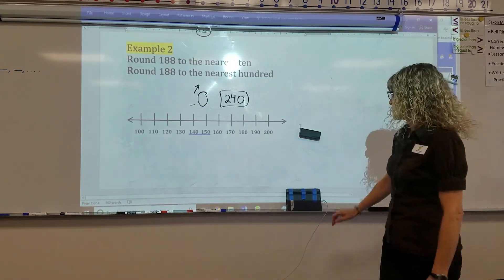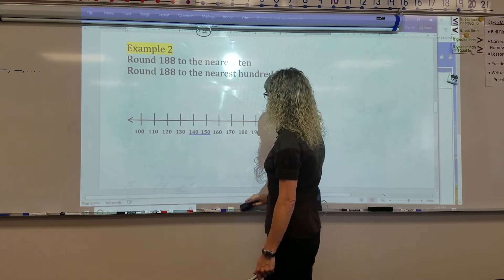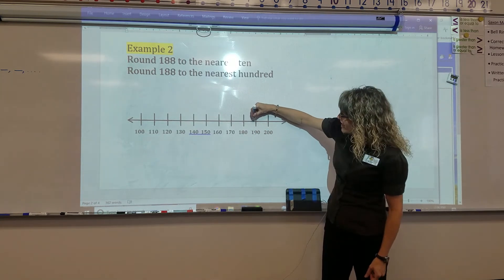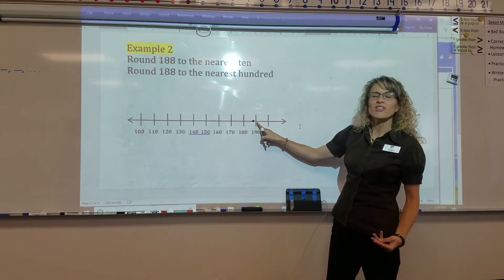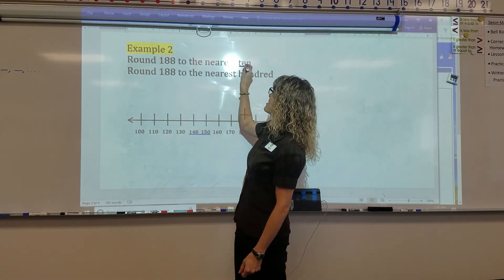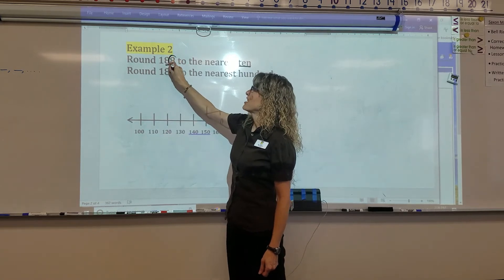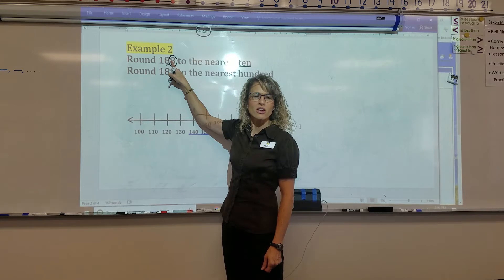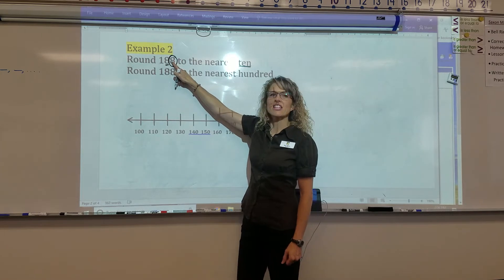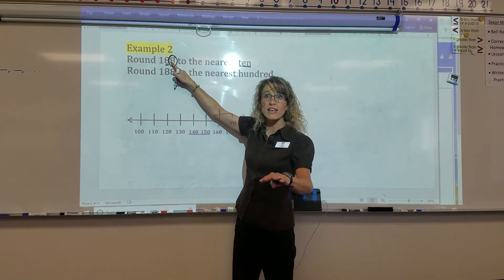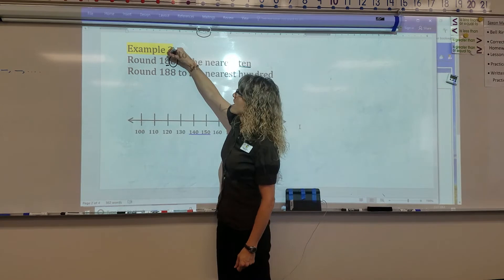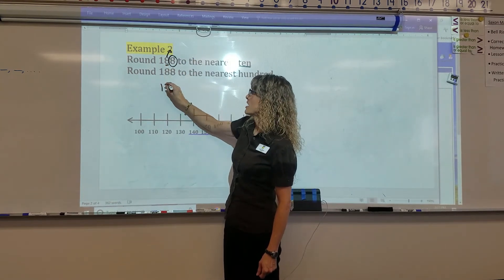Let's look at 188 to the nearest ten. So if we were to graph it, here's 180, there's 190. So the nearest ten has got to be either 180 or 190. Well, 188 is right there, so the one that's closest to it is 190. But let's try our saying. The tens digit is here, so I examine the digit to the right and say: five or more, make it soar; four or less, let it rest. Is this going to soar or rest? Soar. The eight soars, so we're going to get 190.